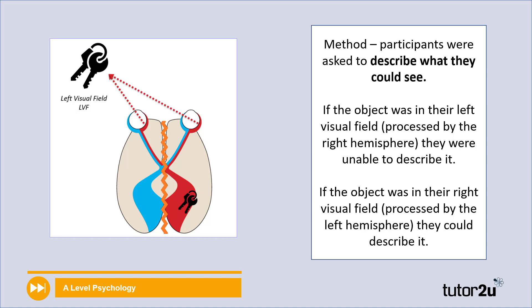In this particular method, there were lots of different stages. First of all, participants were asked to describe what they could see in front of them, just like you can see in the diagram on the screen. Here are some results. If the object was in their left visual field, and we know this is processed by the right hemisphere, they were unable to see it. But if the object was in their right visual field, they could describe it.